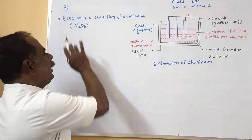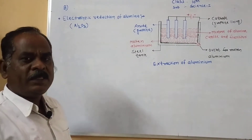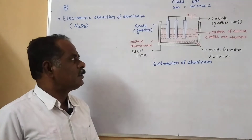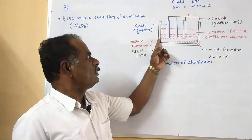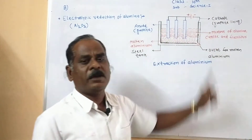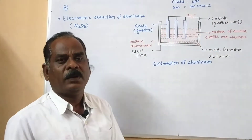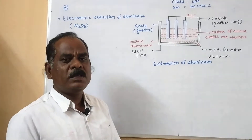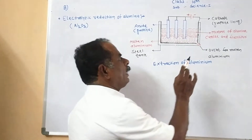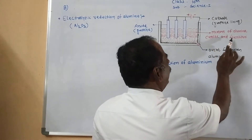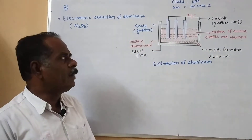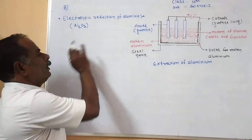Take this dried alumina in a steel tank whose inner layer is coated with a graphite lining. Then mix this dried alumina with an electrolyte of cryolite and fluorspar.